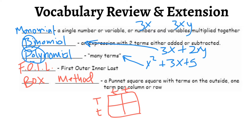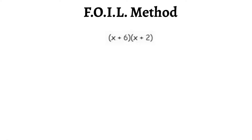Let's try a few examples and see how this goes. Here we're multiplying two binomials: x plus 6 times x plus 2. I'm going to show you how to do this problem using FOIL method and then using box method. After that, one example of each should be enough to give you an idea of which method makes more sense to you or which one you prefer. So let's start with FOIL method.